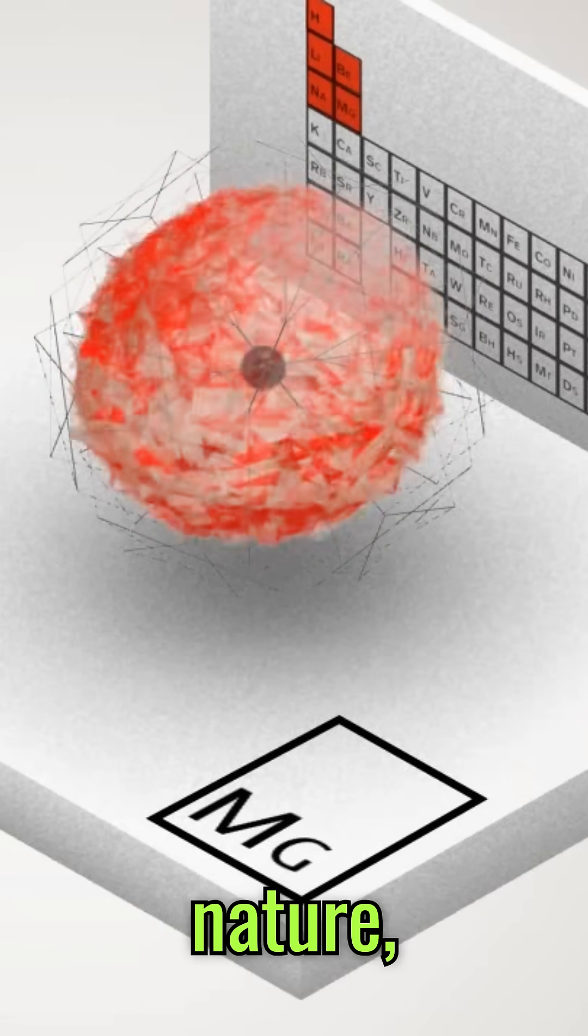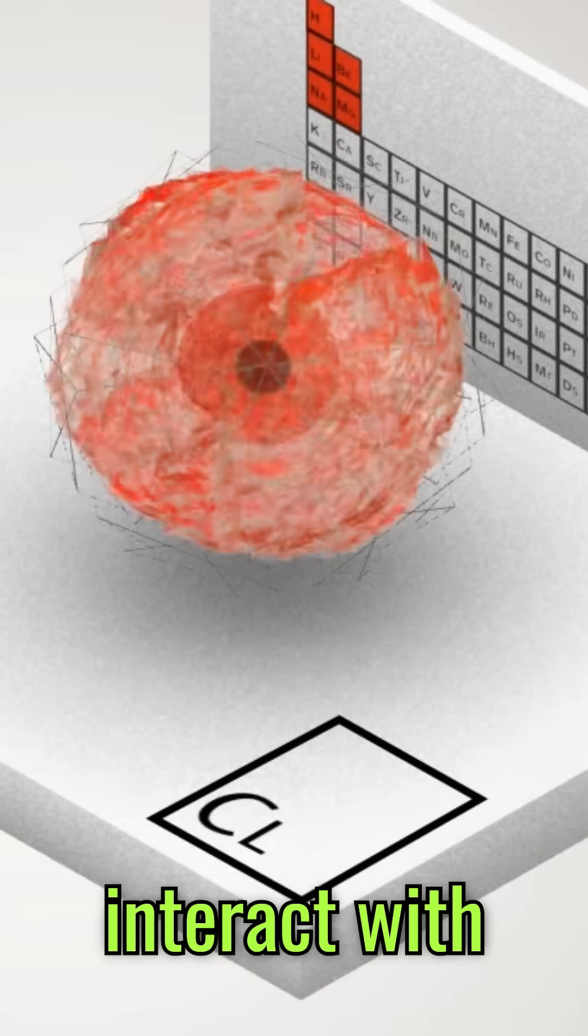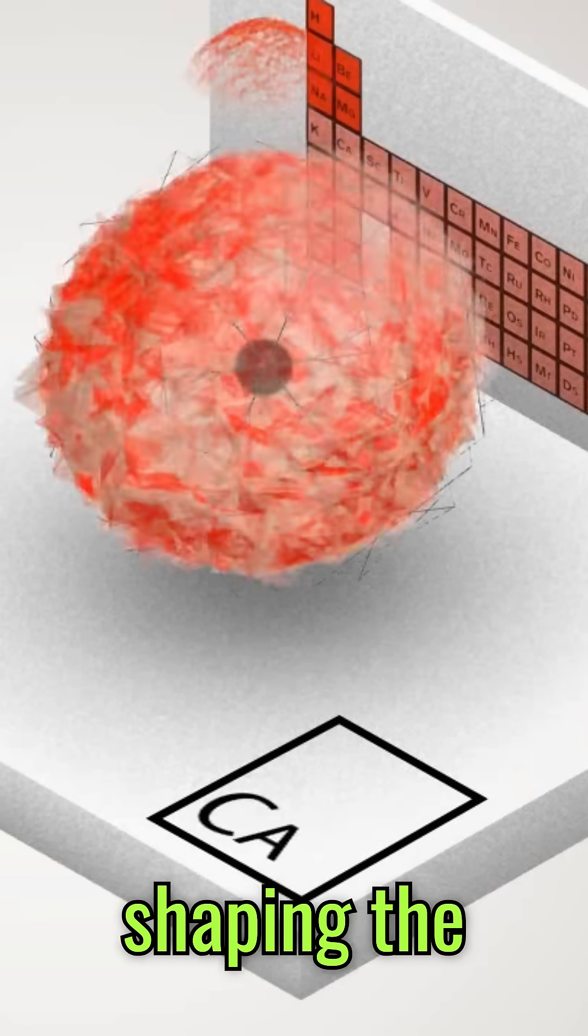Electrons also exhibit a dual nature, behaving as both particles and waves. This wave-particle duality is fundamental to how atoms interact with light and other atoms, shaping the universe as we know it.